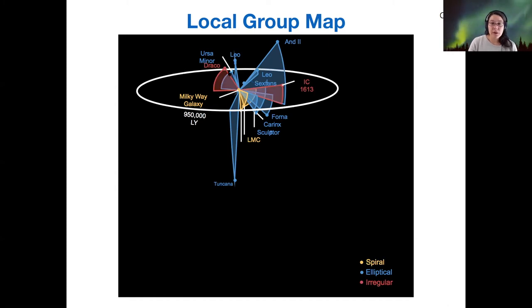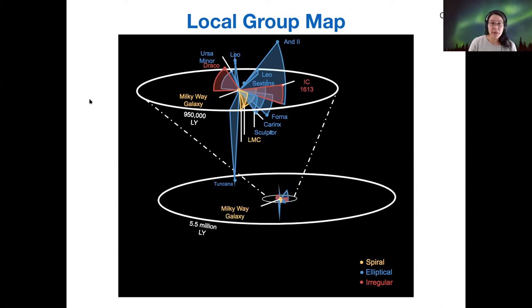There's a couple of irregular galaxies here drawn in red. If you think of this entire area that we've just been considering and then shrink it down, this is what the bottom half of this map is showing us. The Milky Way and all of its little elliptical and irregular friends are down here at the center of this 5.5 million light year circle.